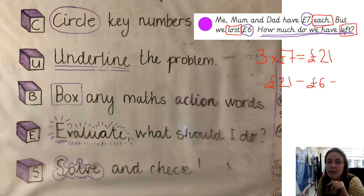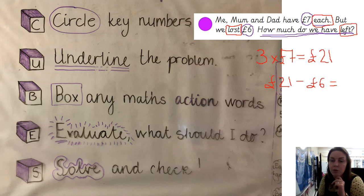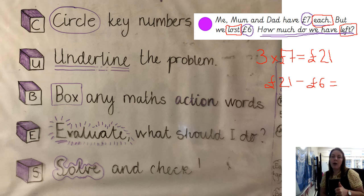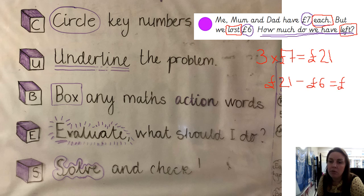So how much money is that? I am going to count down 6 steps — thinking of it as a number line, counting down 6 ones jumps from 21: 20, 19, 18, 17, 16, 15. That means the answer is we have got 15 pounds left. That was our two-step word problem.